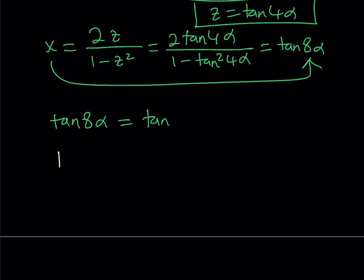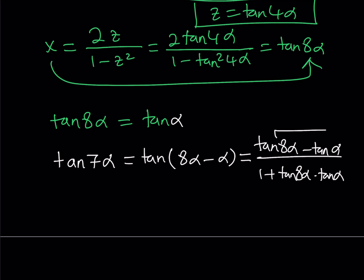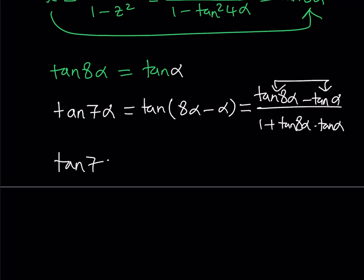We said that tangent 8α equals tangent α. I'm going to write down the formula for tangent 7α using the difference formula. The tangent difference formula is: tangent(x minus y) equals (tangent x minus tangent y) divided by (1 plus tangent x times tangent y). Since tangent 8α and tangent α are equal, their difference is zero. From here we get tangent 7α equals zero.